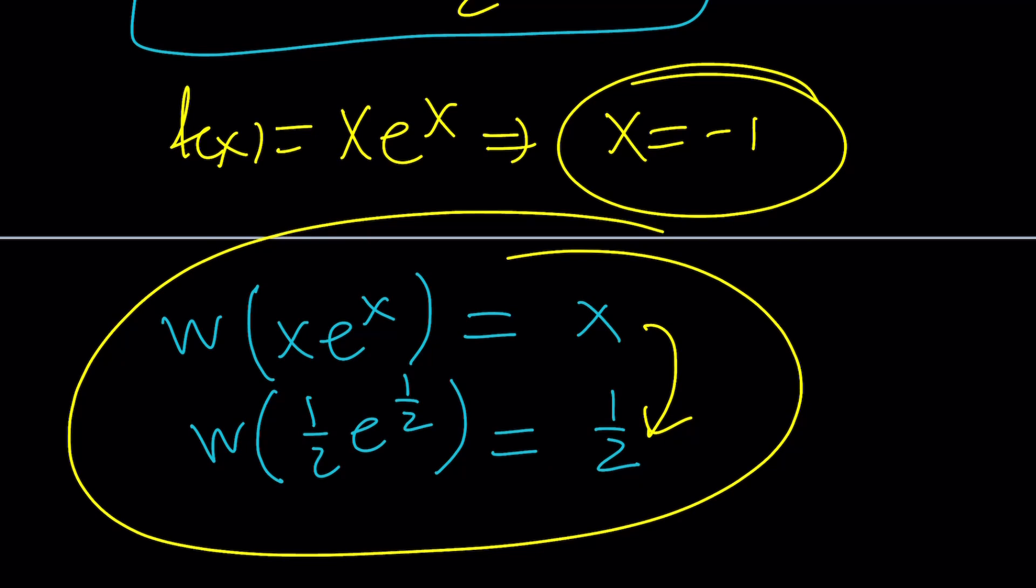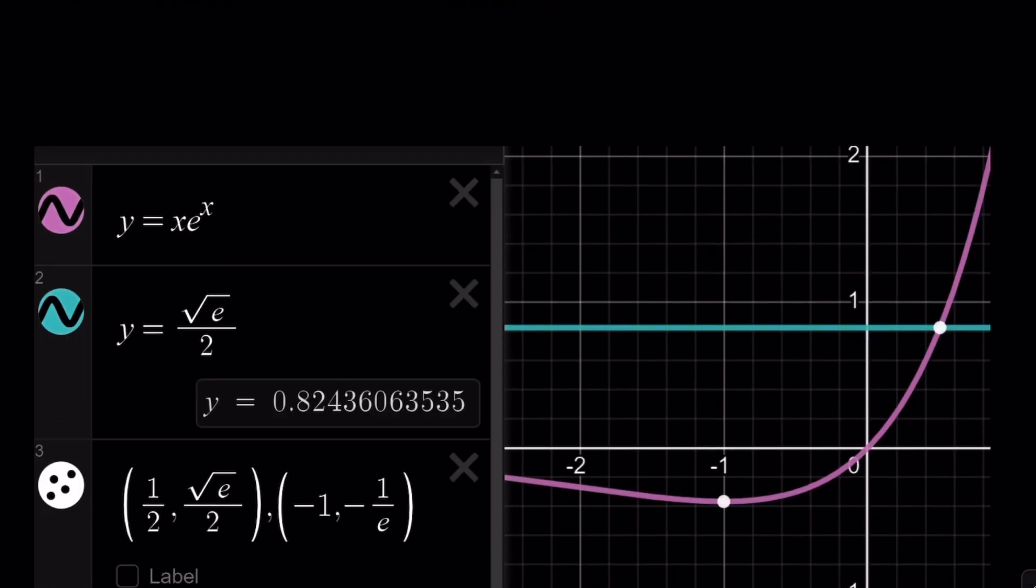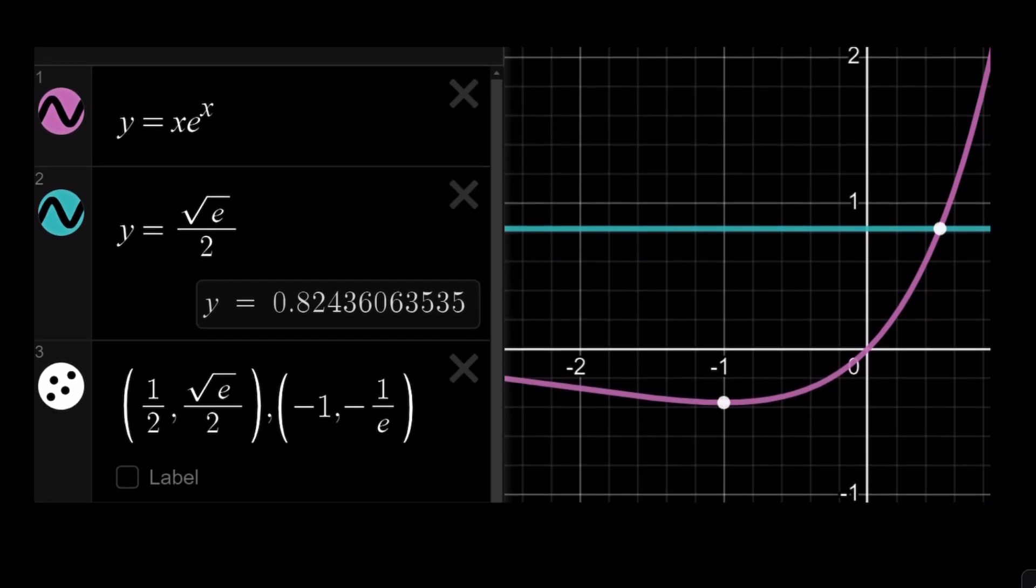We're going to be looking at the graph of x e to the x because it's nice. Notice that we have a minimum at negative one. Therefore our function is decreasing and then increasing. Now here's what happens. Our y value here which is square root of e over two is 0.82 something which is greater than this y value here which I marked as negative one over e. That's a negative value. Our y value is greater because if you have anything between those two y values the horizontal line is going to intersect the graph at two points which means we're going to have two solutions. That's why there are two branches of Lambert's W function.